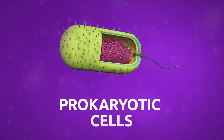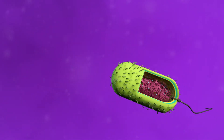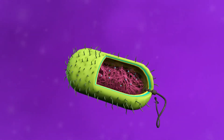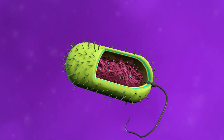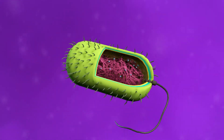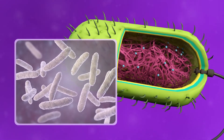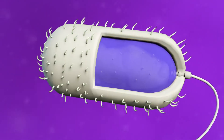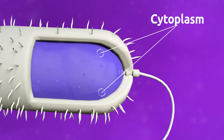Prokaryotic cells: the main characteristic of prokaryotic cells is that DNA, the genetic material, is floating in the cytoplasm instead of being stored in the nucleus. Bacteria are prokaryotic cells. The cytoplasm is a liquid solution found inside the membrane.